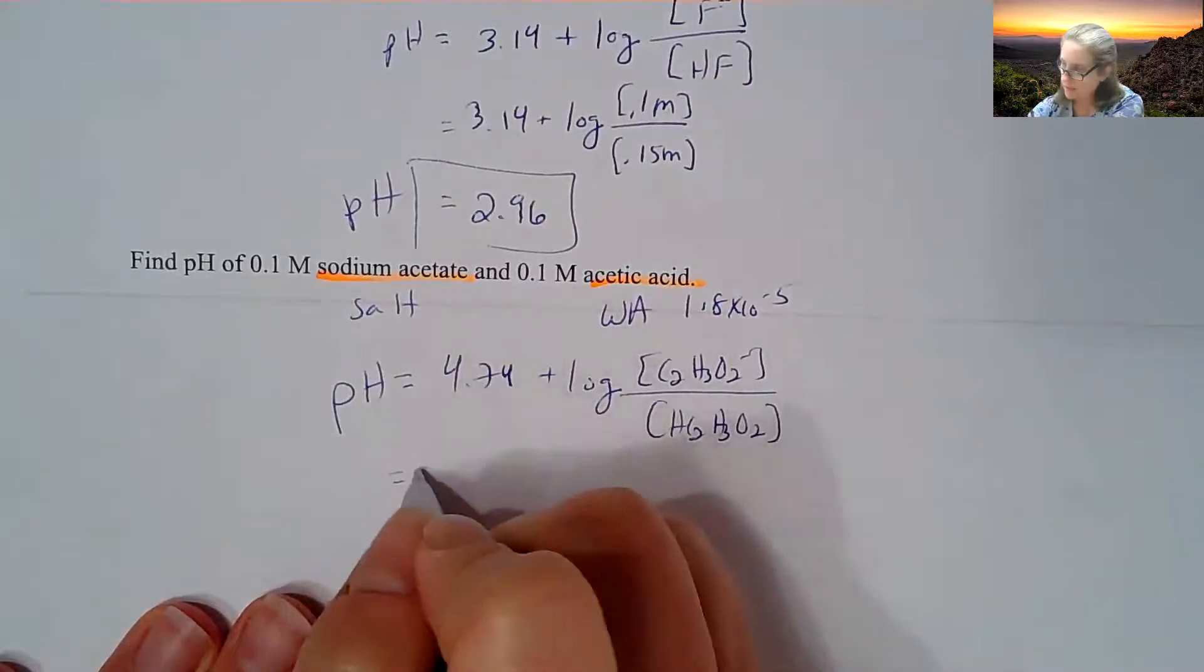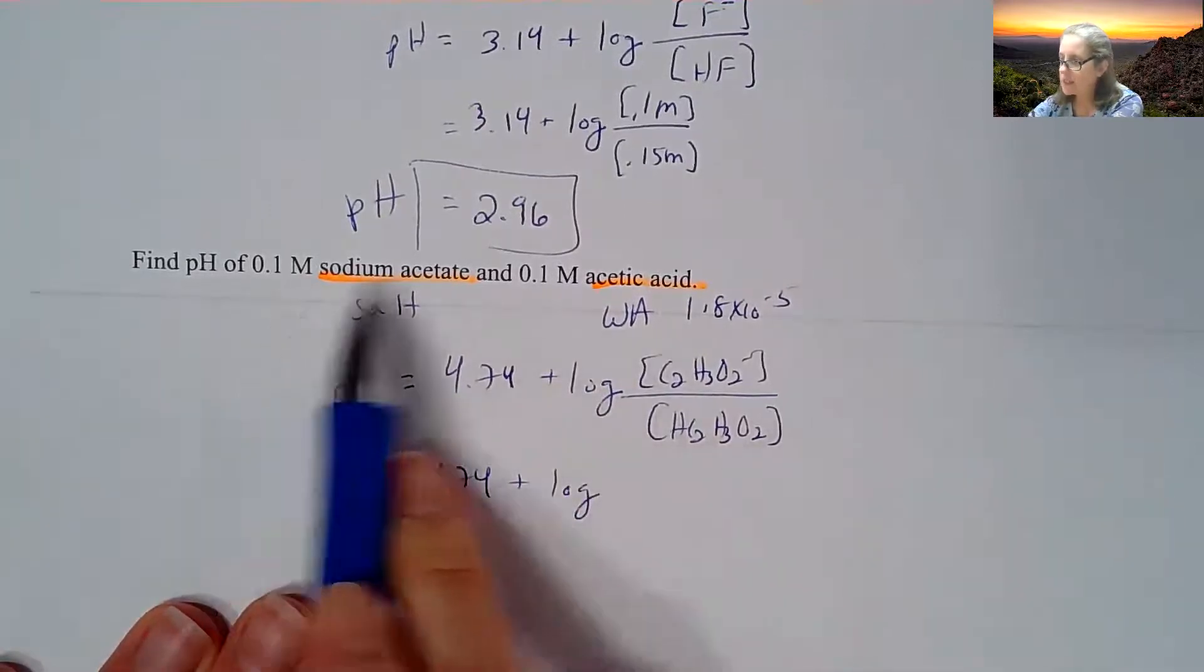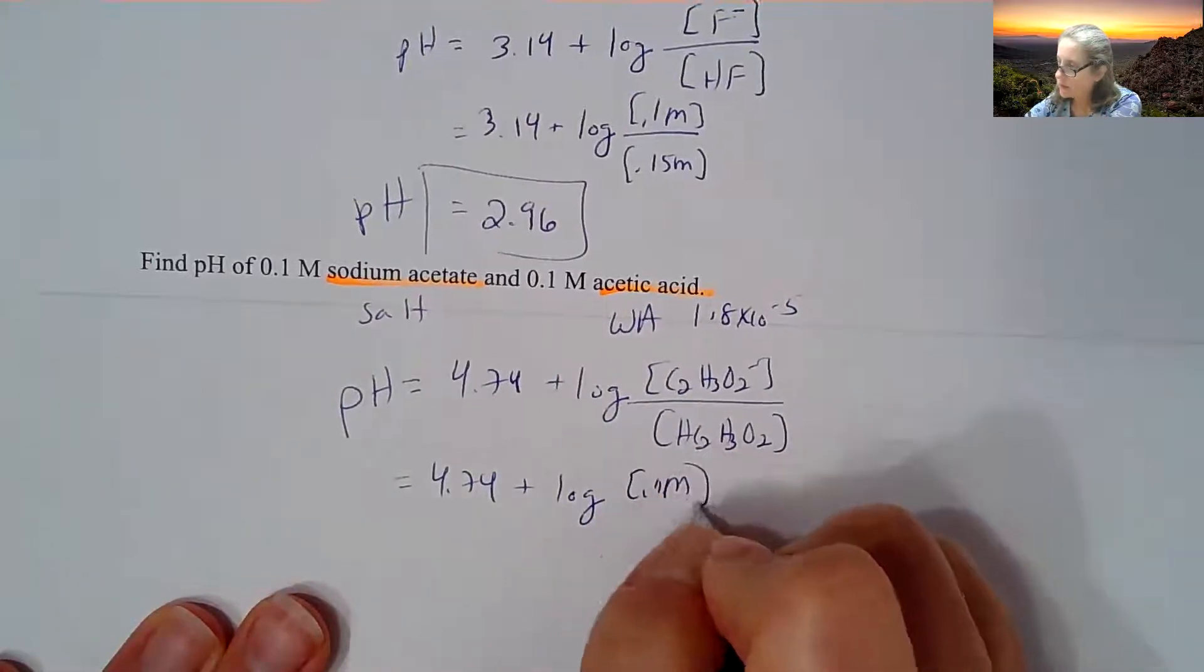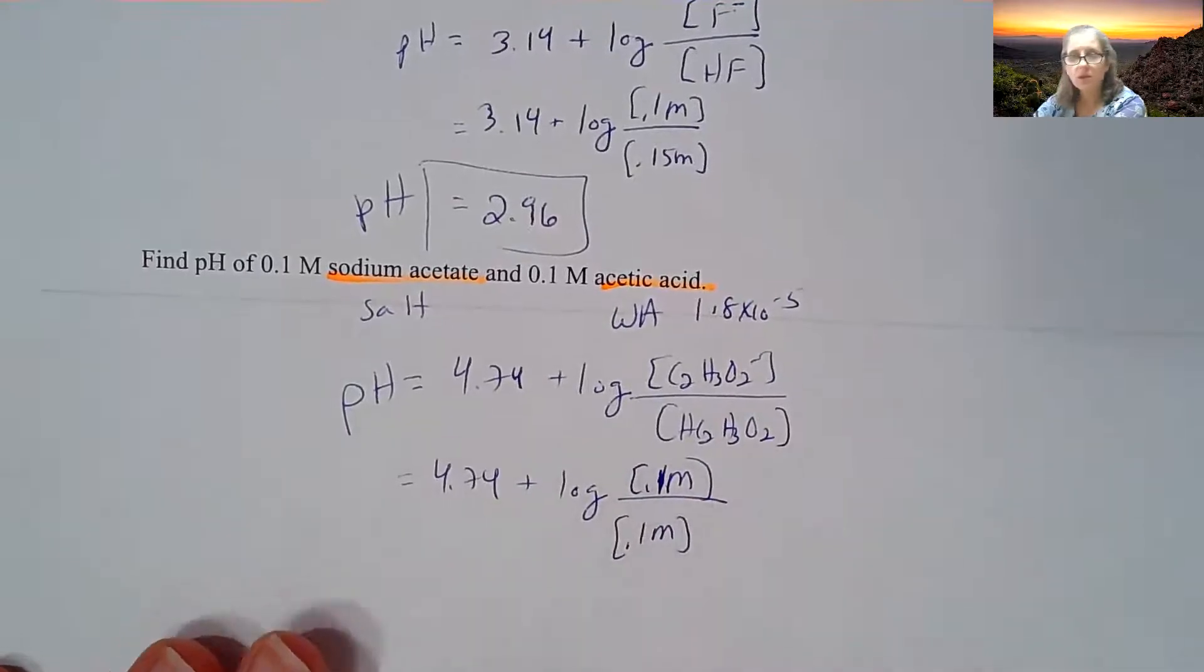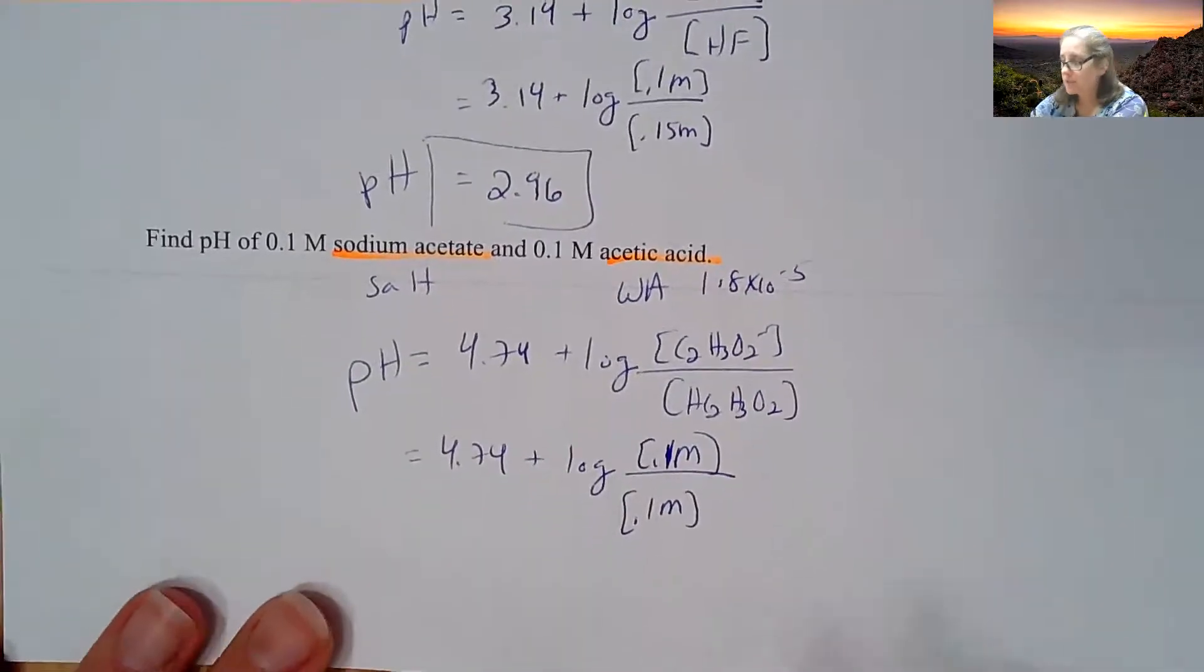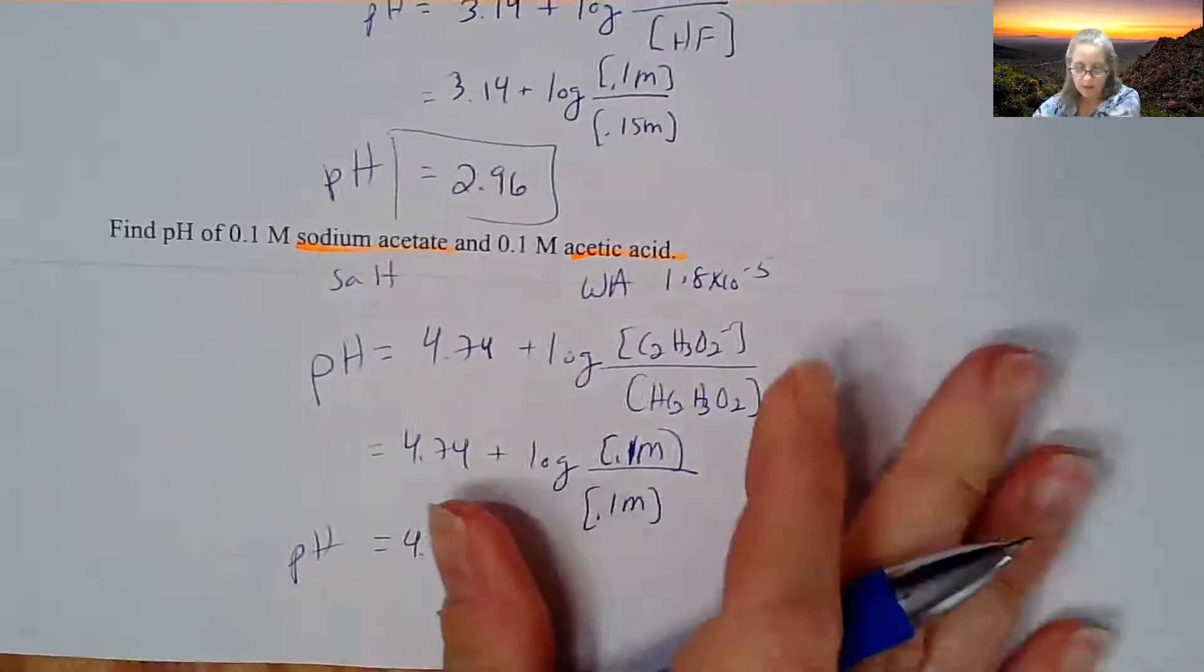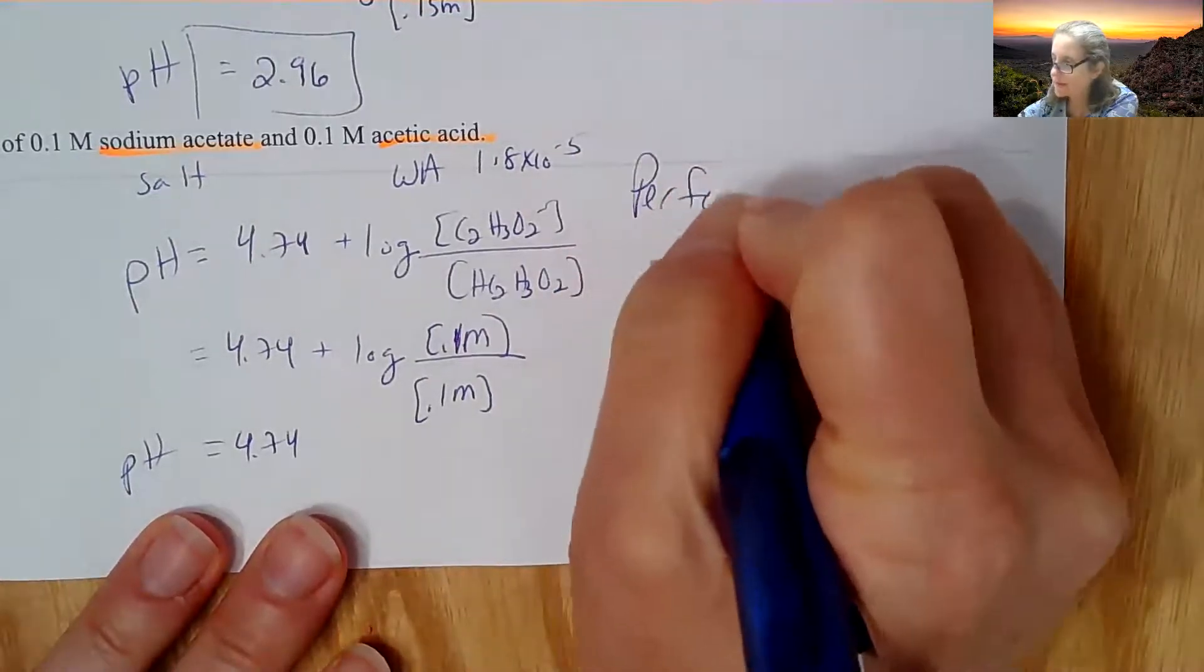So that's going to be 4.74, plus the log of, well, in this case, they are both 0.1. So 0.1 molar over 0.1 molar. So what's the log of 1? It's 0. So you get 4.74. So this is a unique situation. This is called a perfect buffer.